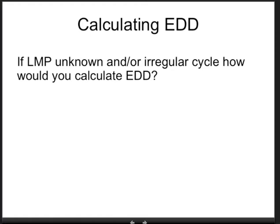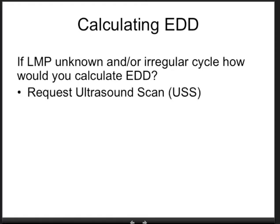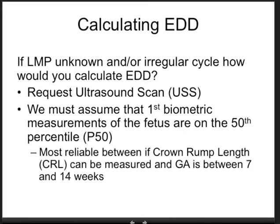If the last menstrual period is unknown and the cycle is irregular, we request an ultrasound scan. The ultrasound scan answers this question more reliably than clinical examination or measuring the fundal height, which we would only use when ultrasound is not available. When measuring the embryo or fetus, we assume the measurement is on the 50th percentile. When we measure the crown-rump length between 7 and 14 weeks, we can very reliably calculate the due date — even more so between 7 and 10 weeks.